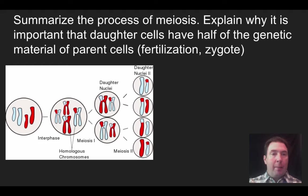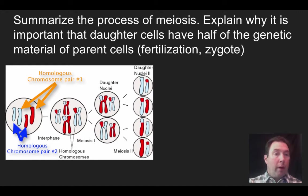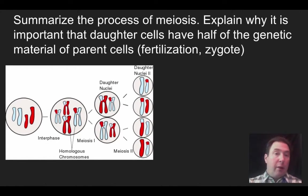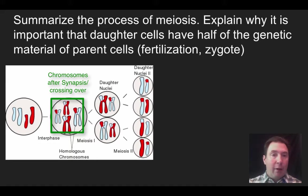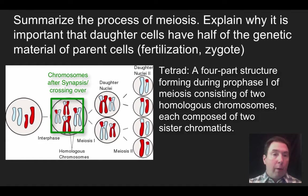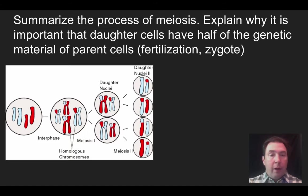In our sample, we start with a cell in interphase that has four chromosomes — the diploid number is four. There are two larger chromosomes and two slightly smaller ones: two number one chromosomes and two number two chromosomes. During interphase, these go from single chromatid chromosomes to double chromatid chromosomes. Those chromosomes then undergo synapsis or crossing over. In the second image, you see the homologous chromosomes after a tetrad has formed — four chromatids from one chromosome pair lined up together, which is why it's called a tetrad.